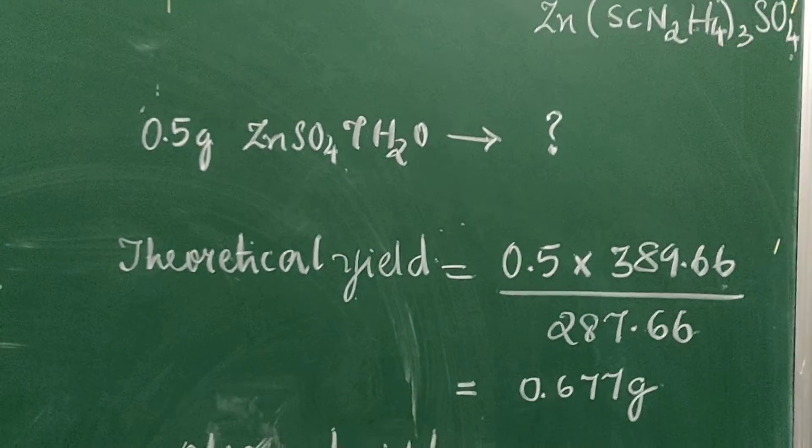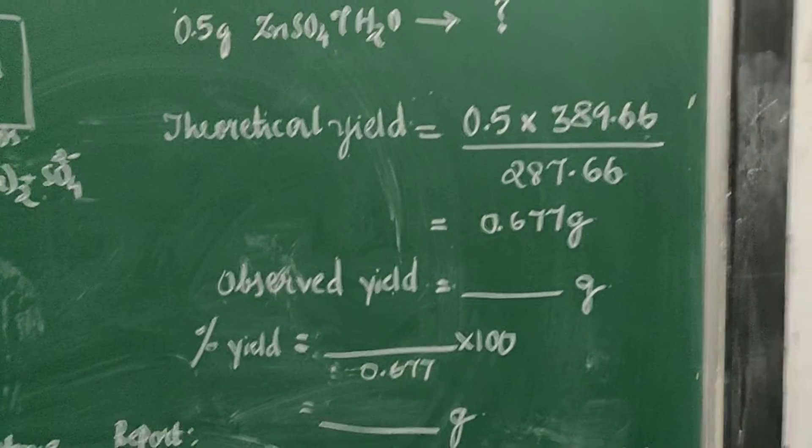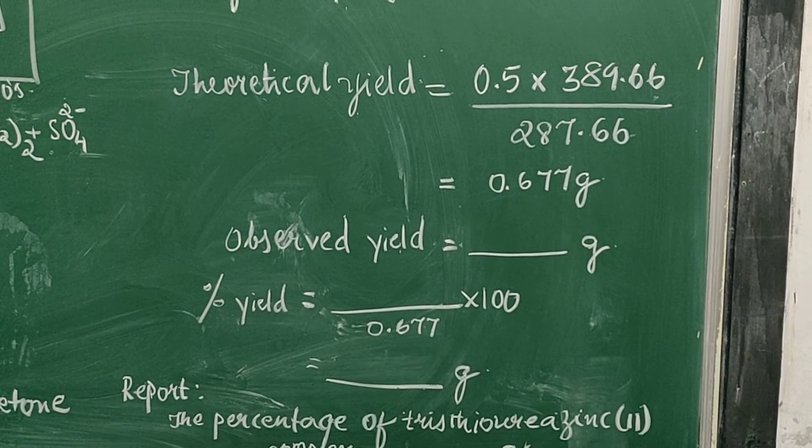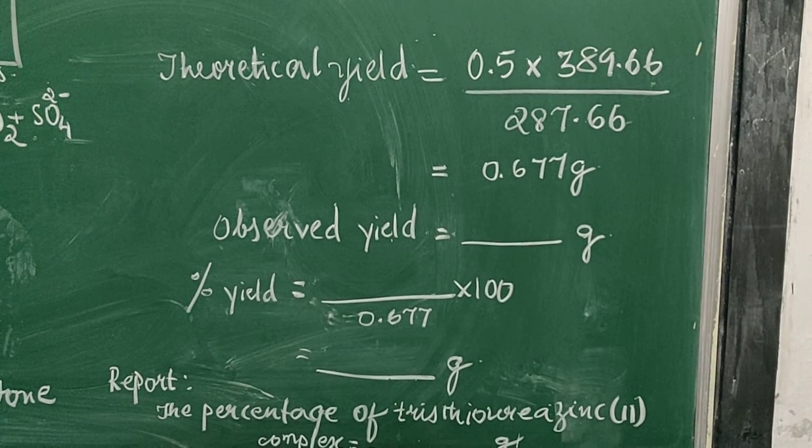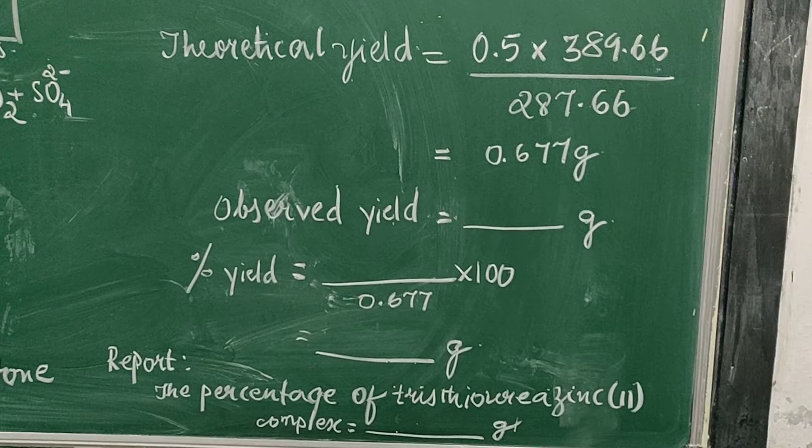But we have started with 0.5 grams of zinc sulfate, and hence the theoretical yield will be 0.5 times 389.66 divided by 287.66, that is 0.67 grams.